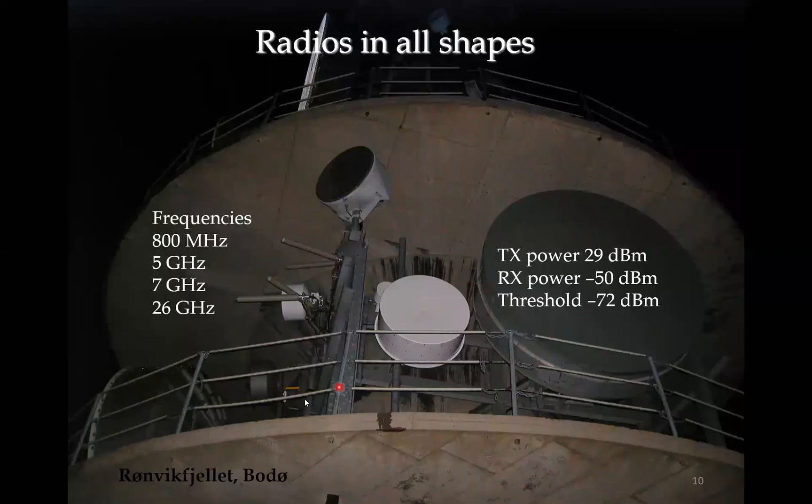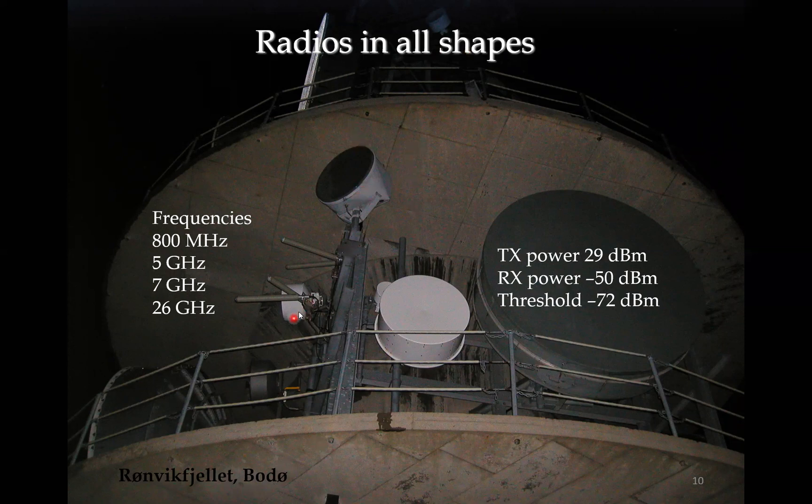Here just a tower at the Rönnvik mountain in Bodø. You see radios in all shapes. This is a very old one. These are new ones. You see those are smaller. They are shooting very short distances. Here is an older one shooting at longer distance. And you see typically it has an output power of 29 dBm. The receive power is about minus 50 dBm. And the threshold is about minus 72 dBm. Frequencies all here. This is 800 megahertz. 5 gigahertz is typically this. 7 also. And 26 is typically this. So the smaller the antennas, typically the higher the frequency. Because the gain is higher at higher frequency. And we will come back to that.